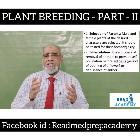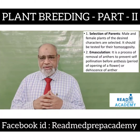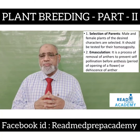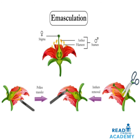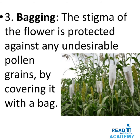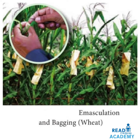Selection of parents: male and female plants of the desired characters are selected and should be tested for homozygosity. Emasculation is the process of removal of anthers to prevent self-pollination before anthesis — the period of opening of a flower or dehiscence of the anther. In the emasculation image, you can see the entire flower with the male sex organ (anther and filament constituting the stamen) and the style and stigma. The removal of the anthers while leaving the stigma is emasculation, after which pollen from another flower is deposited on the stigma. Bagging is the protection of the stigma against undesirable pollen grains by covering it with a bag. The image shows the procedure of emasculation and bagging of wheat.